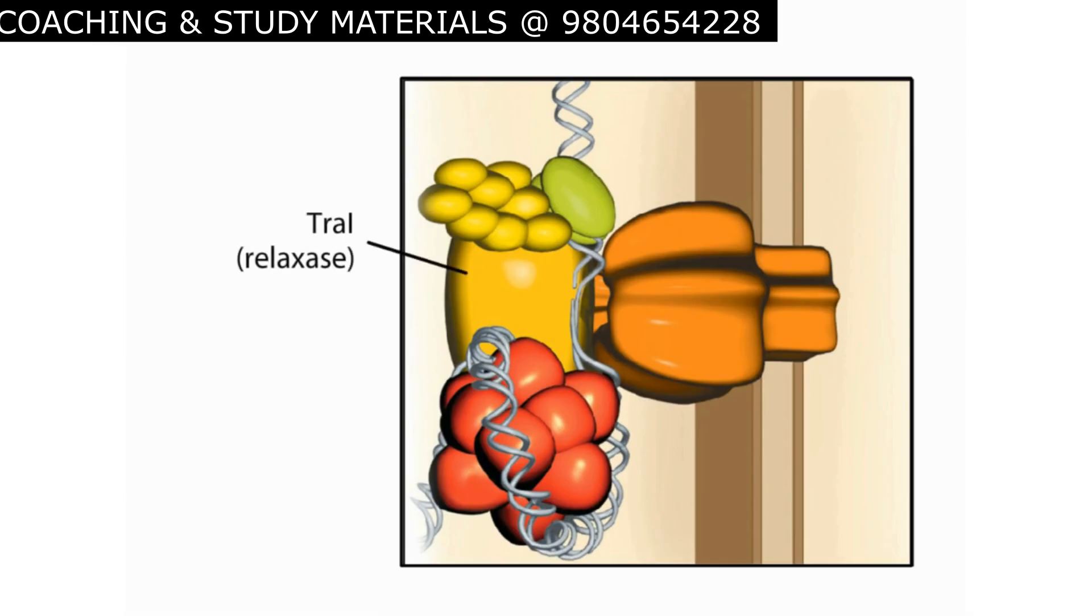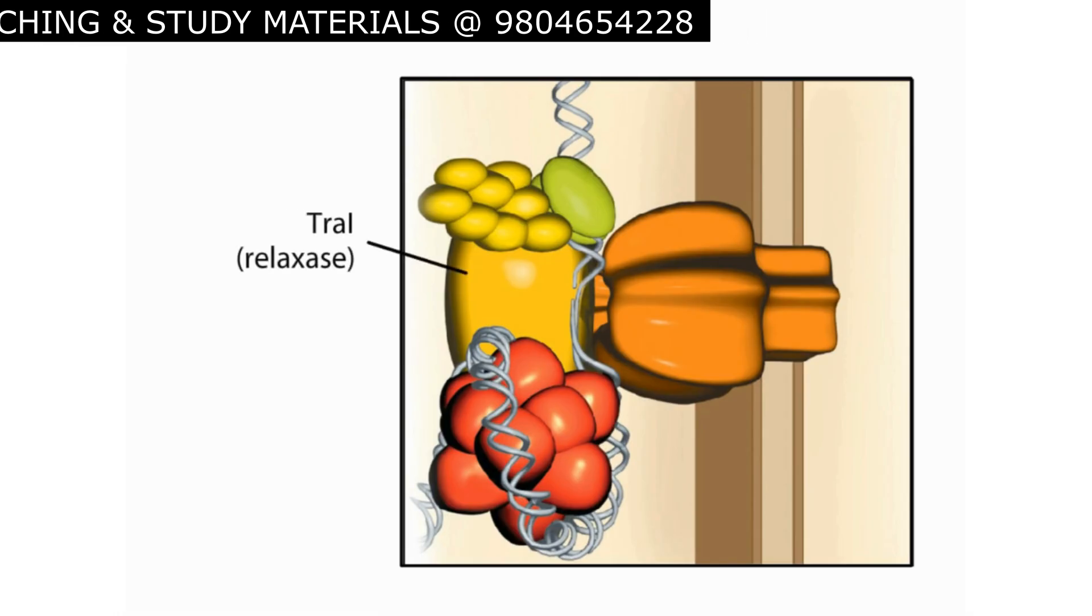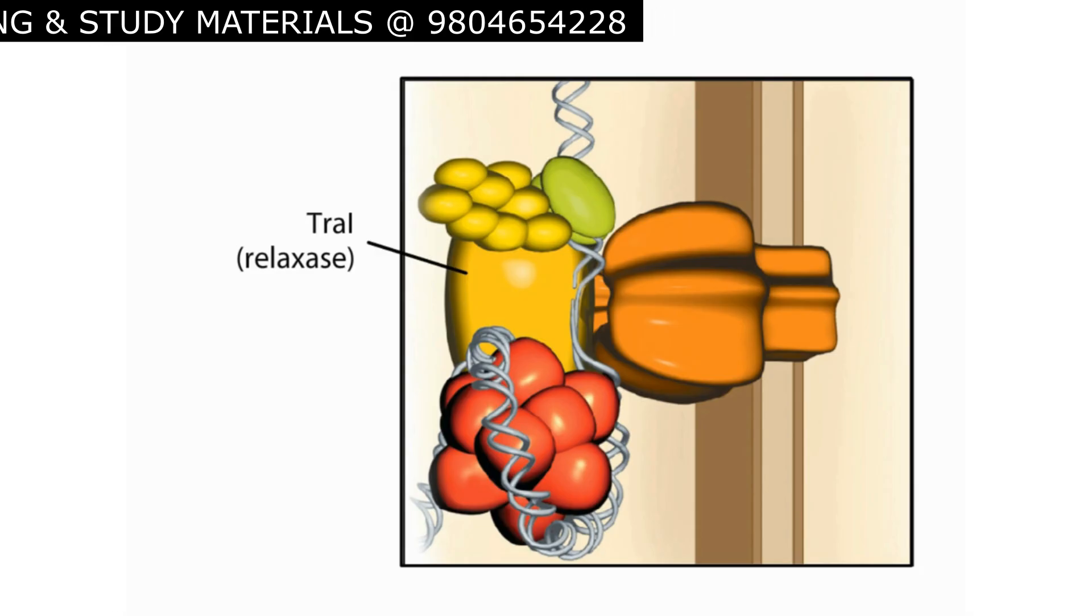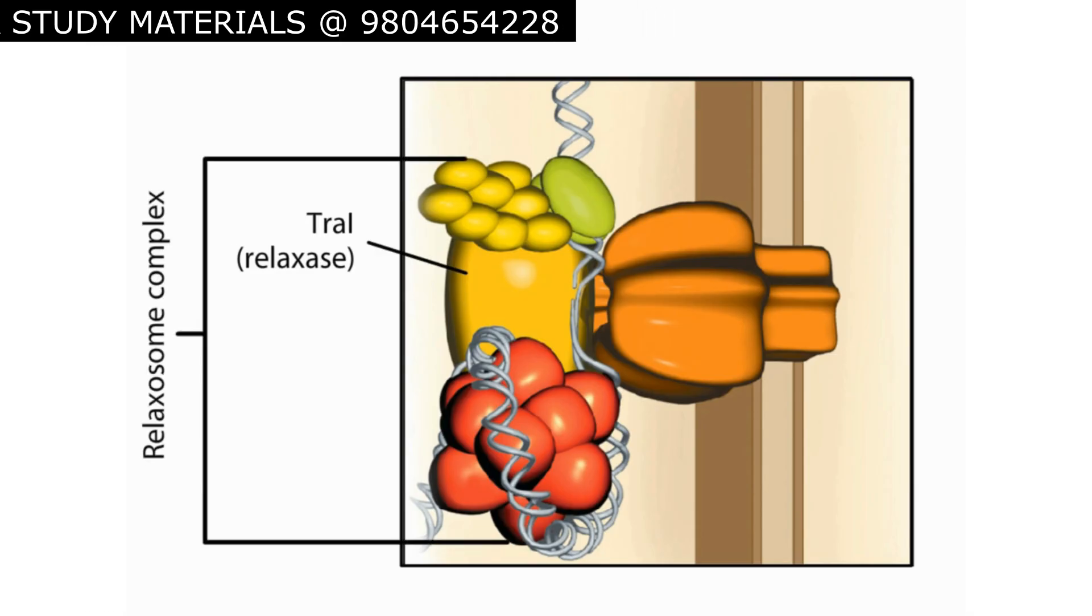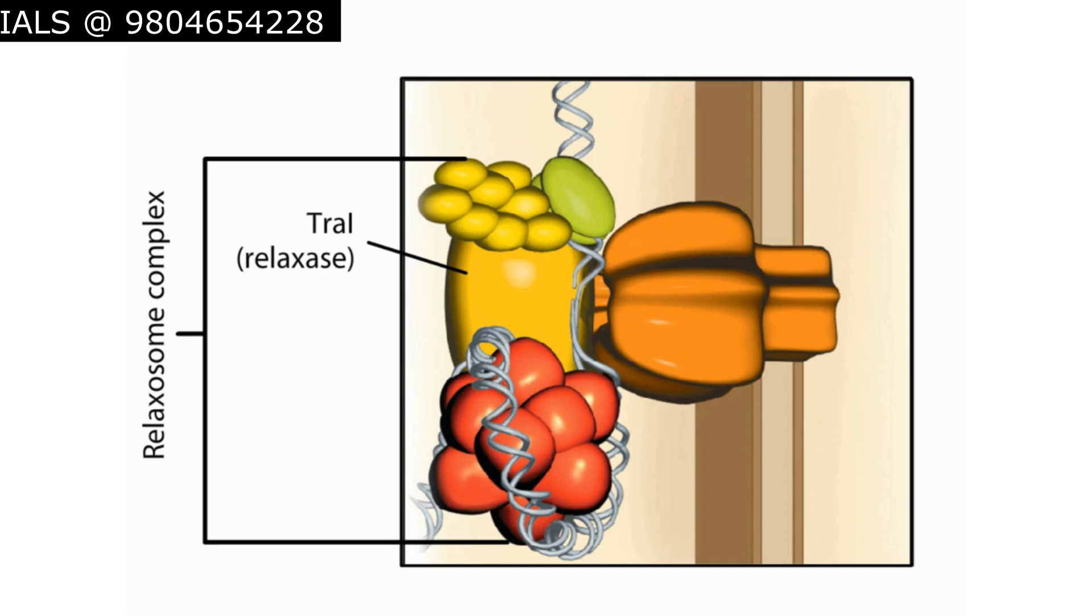TRA-I, also called relaxase, works in combination with other F factor encoded proteins to form the relaxosome complex. Here the relaxosome is shown wrapped in the F factor DNA at the membrane bridge. The relaxase enzyme nicks the phosphodiester backbone at ORI-T.